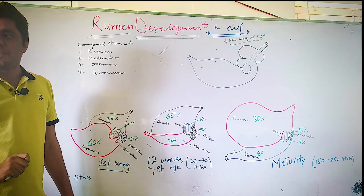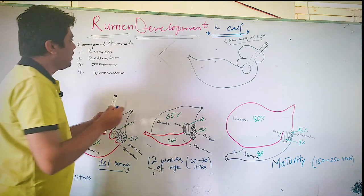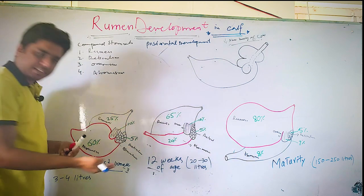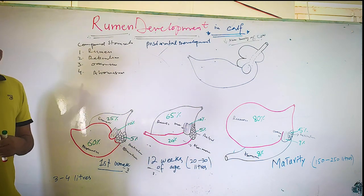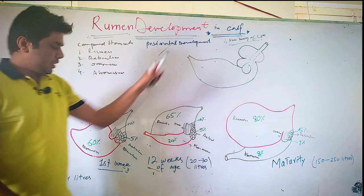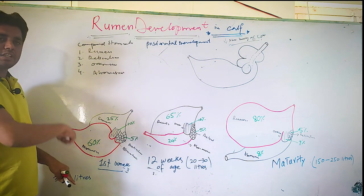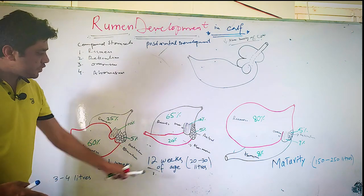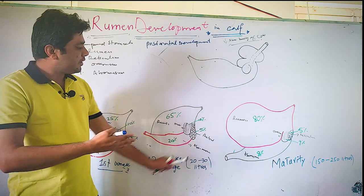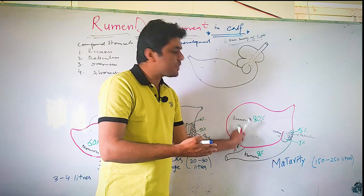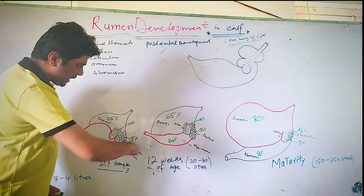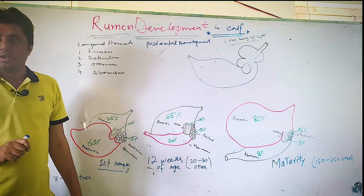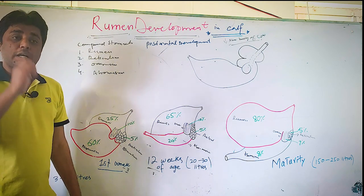This process — where at birth the abomasum is the largest compartment, but by three to six weeks the rumen starts to grow and eventually becomes the biggest part — is what we call rumen development. This is specifically postnatal development, happening after birth.